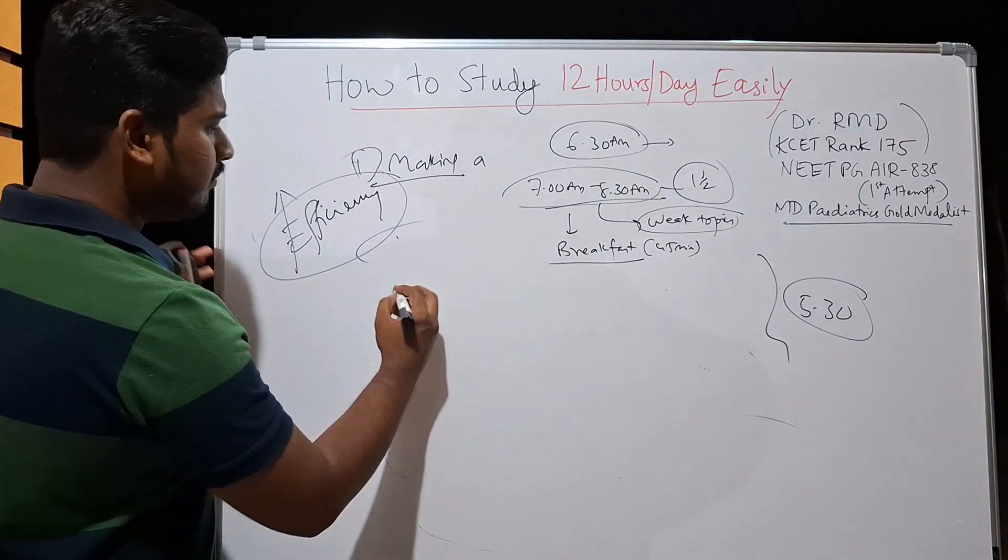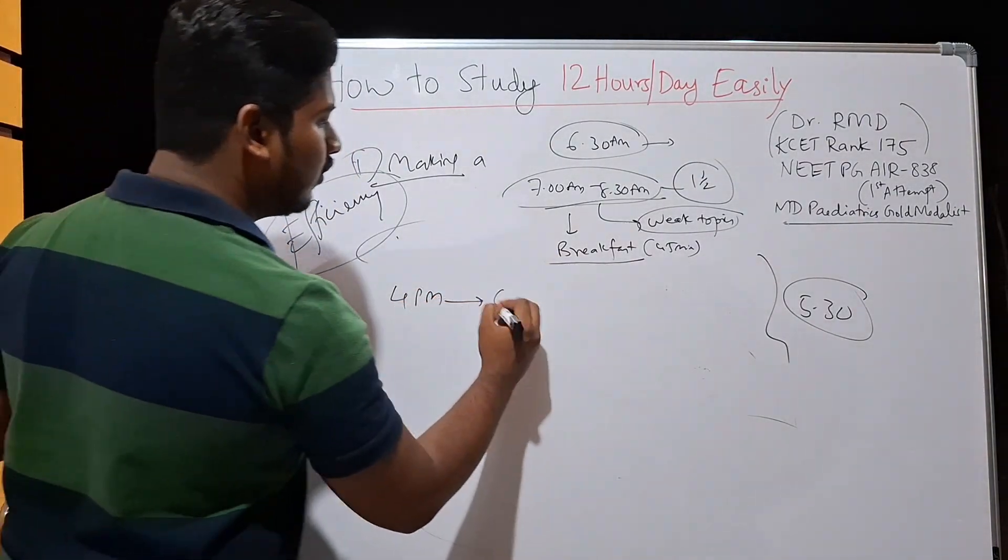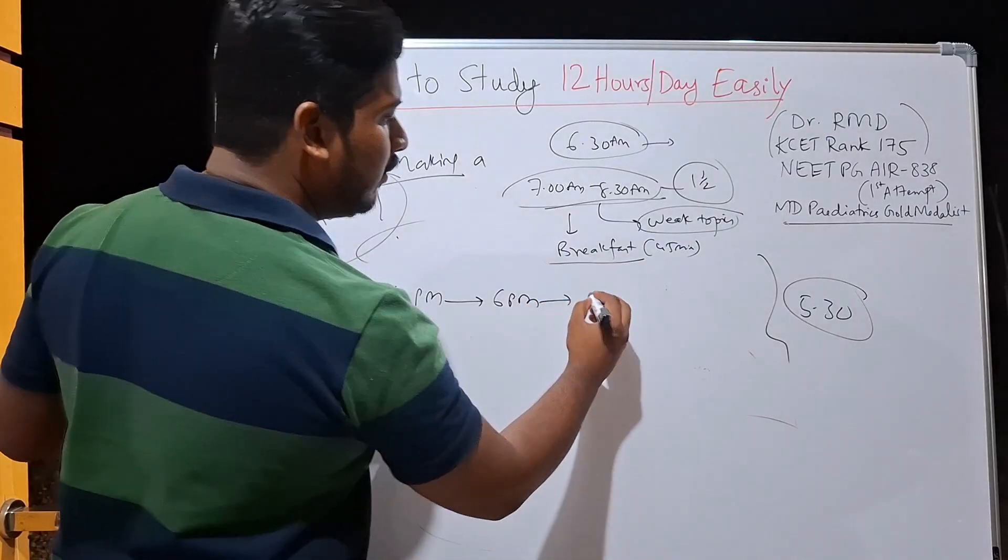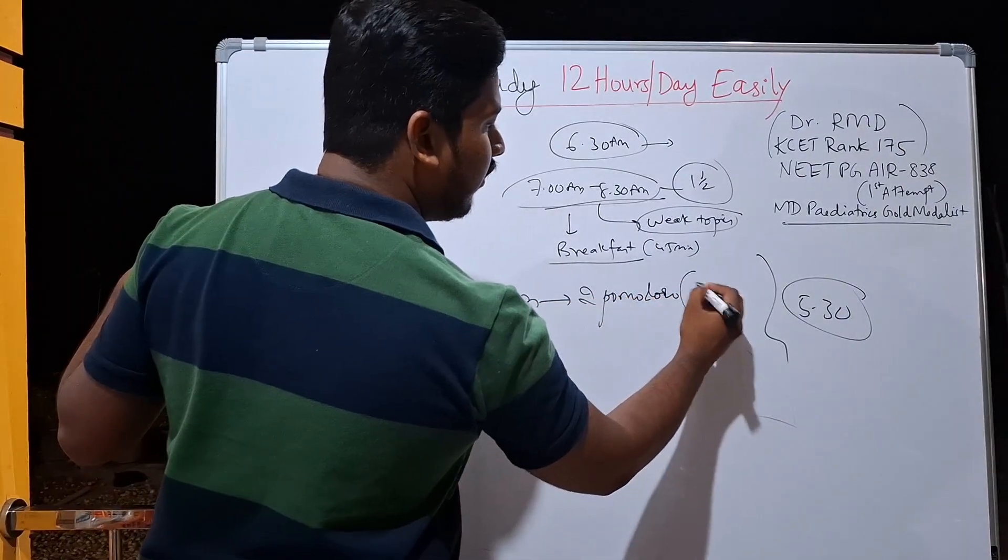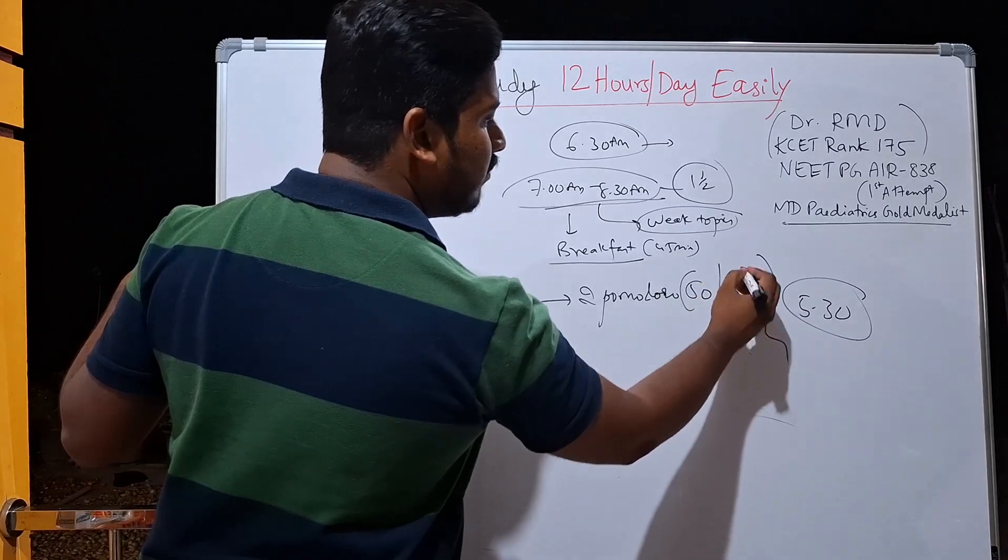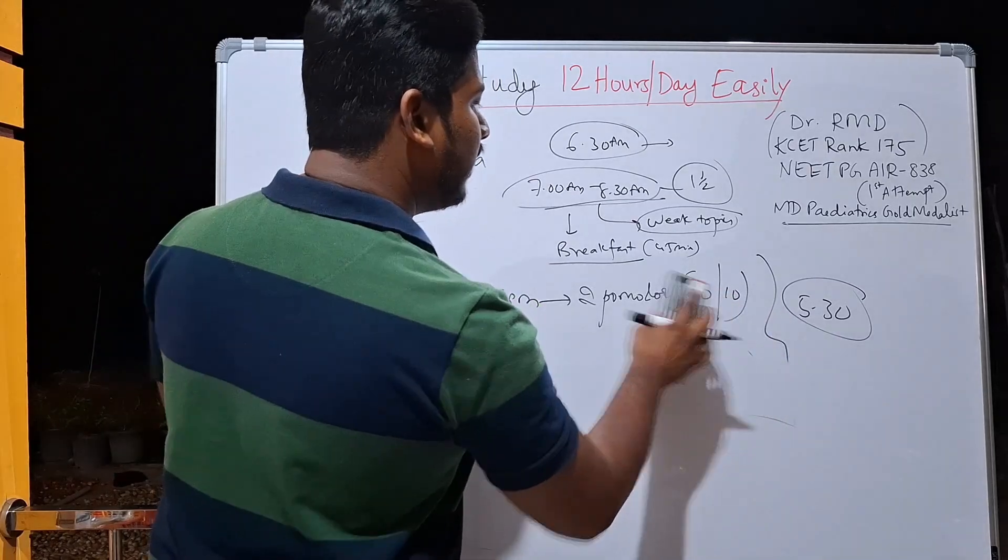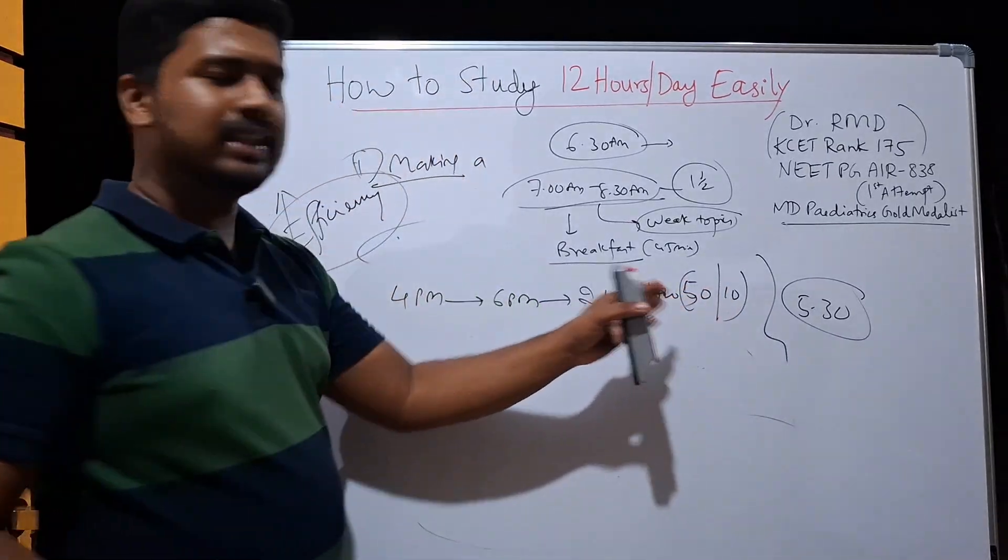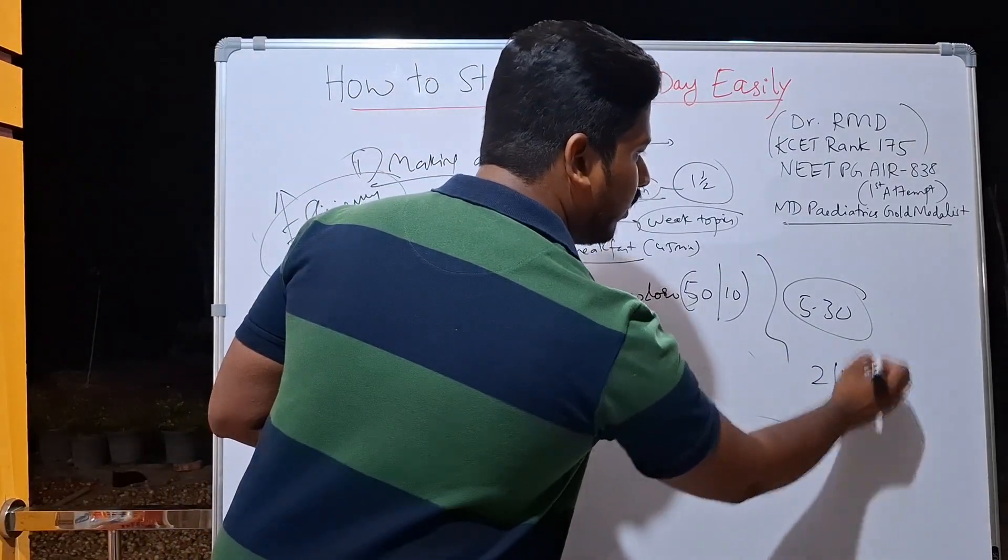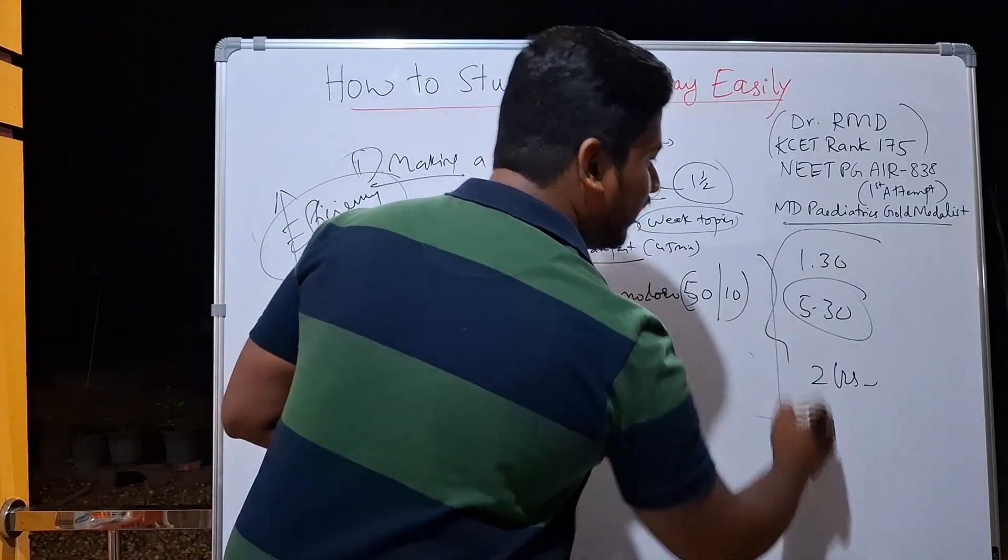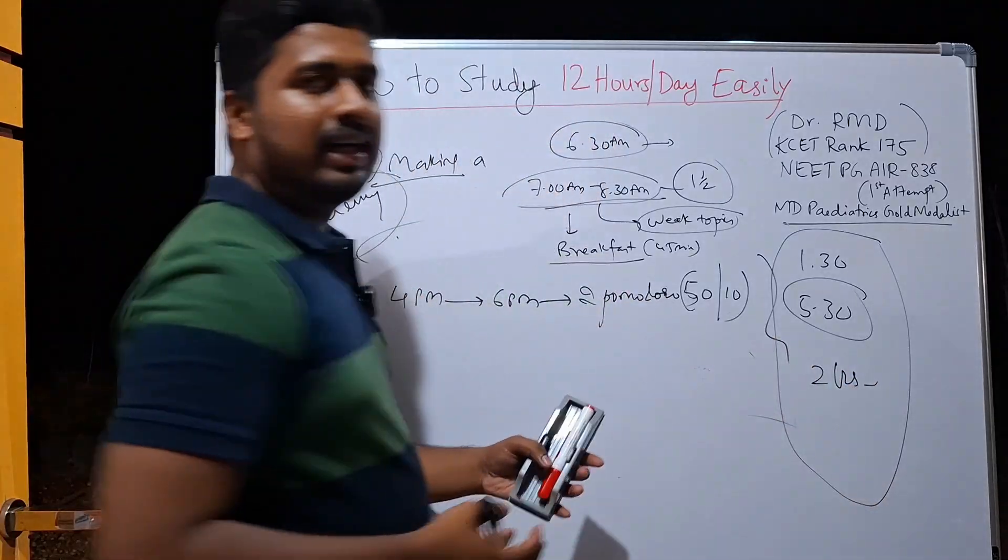So you will start at 4 p.m. and you will go to 6 p.m. Here you will be doing two Pomodoro sessions. Same thing. But here you will be doing it for 50 minutes and 10 minutes of break. Got my point? 50 minutes and 10 minutes of break. So essentially here you will be having almost 2 hours. So initially we had 1 and a half hour, then we had 5 and a half hour, then we had 2 hours.